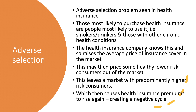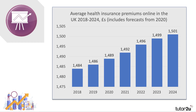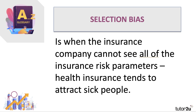Adverse selection in the health insurance market can lead to people being priced out. Looking at average health insurance premiums in the UK from 2018 forecast through to 2024, the average premium is already £1,400 and forecast to keep rising each year. The key problem to be aware of is selection bias — the insurance company cannot see all of the insurance risk parameters, and health insurance tends to attract sick people.